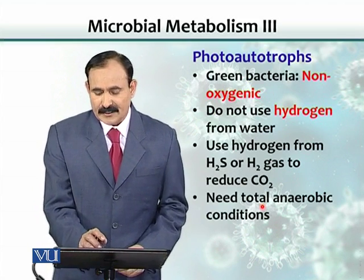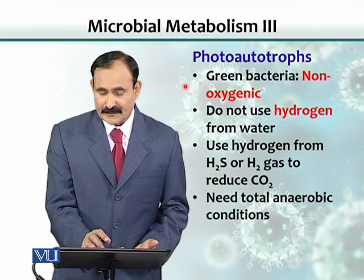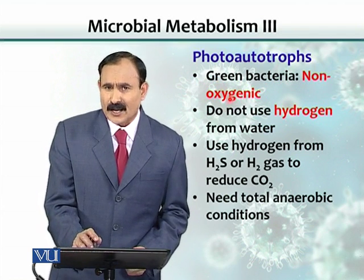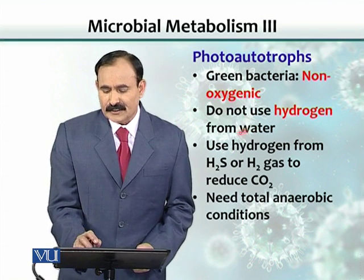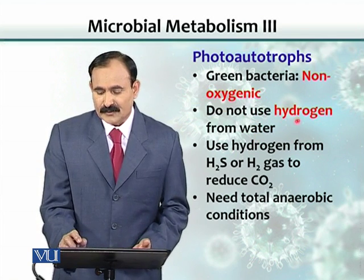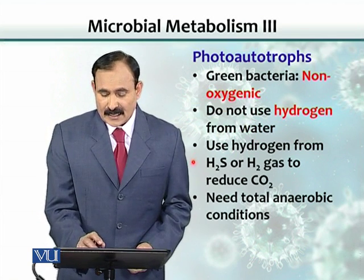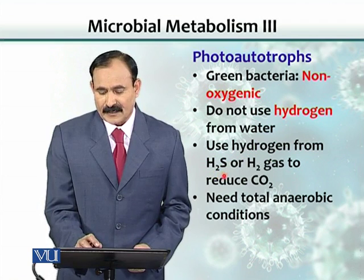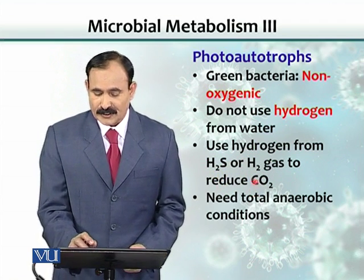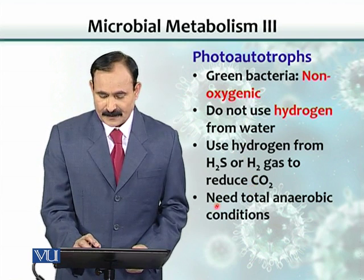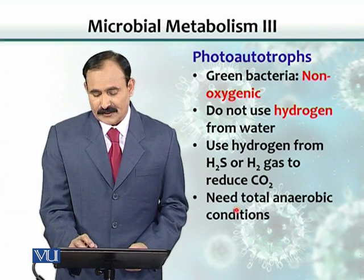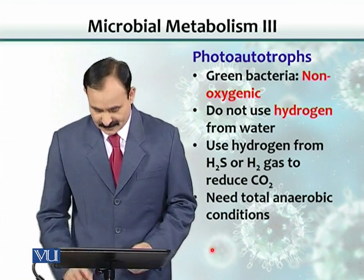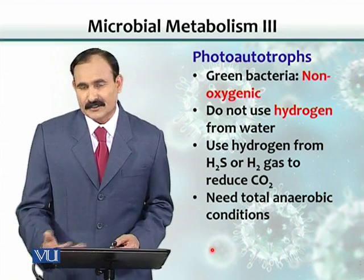Photoautolithotrophs (photolithotrophs), on the other hand, use energy from light but are non-oxygenic, like green bacteria. They do not produce oxygen because they do not use hydrogen from water. Instead, they use hydrogen from other substances such as hydrogen sulfide or hydrogen gas to reduce carbon dioxide. No oxygen is released, and they require totally anaerobic conditions — oxygen is toxic to them.